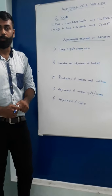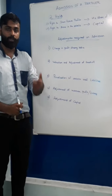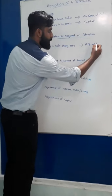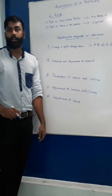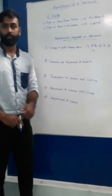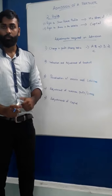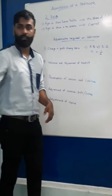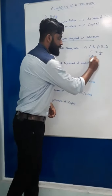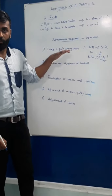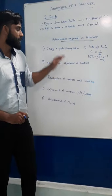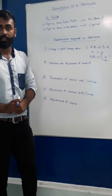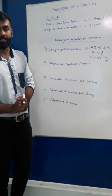The first adjustment is changing profit sharing ratio. For example, A and B were running a business in the ratio 3:2. A new partner C is now being admitted, and C will get 1/6 share. The new ratio will be 3:2:1. We will study how this ratio is calculated. There will be a change in profit sharing ratio among the partners, where some partners may be sacrificing and some may be gaining. We will discuss how to calculate these ratios.